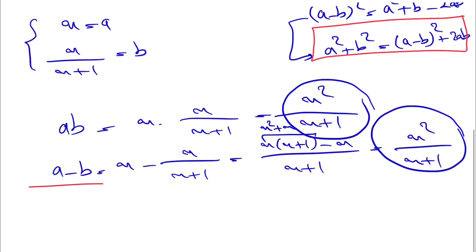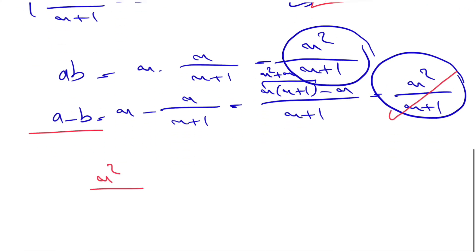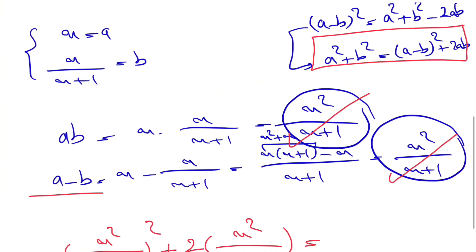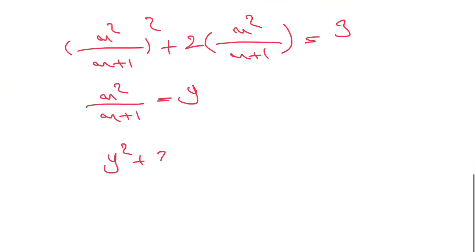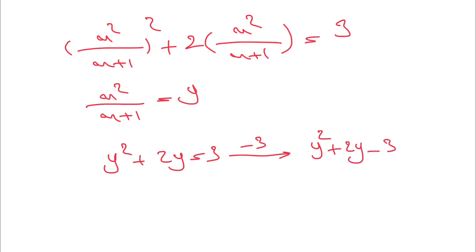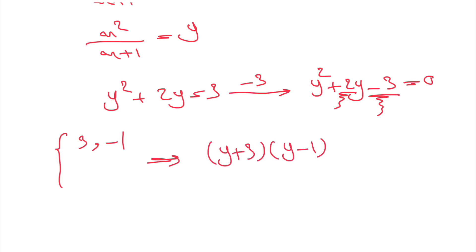We're going with (a − b)² + 2ab. We know a − b = x²/(x+1), so we have [x²/(x+1)]² + 2·[x²/(x+1)] = 3. Let's call y = x²/(x+1). Then we get y² + 2y = 3, which gives y² + 2y − 3 = 0. We can factor this as (y + 3)(y − 1) = 0.